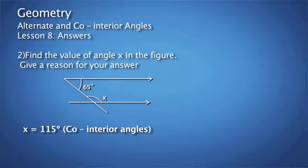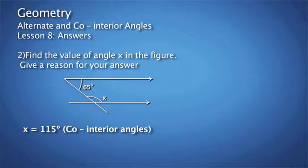Question 2: Find the value of angle X. Angle X and the given angle of 65 degrees are co-interior angles. So angle X is equal to 180 degrees minus 65 degrees, which gives us 115 degrees.